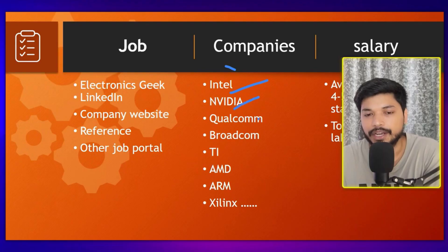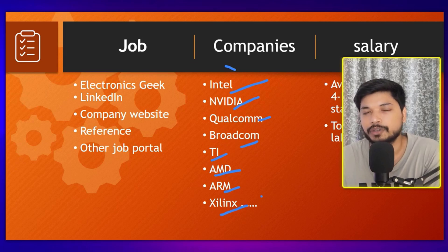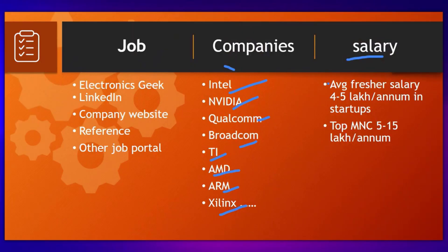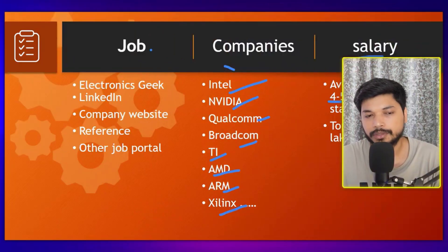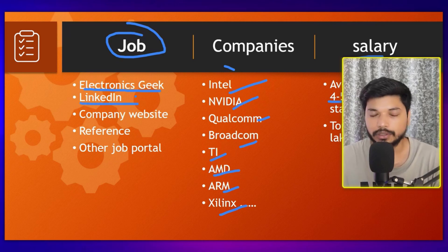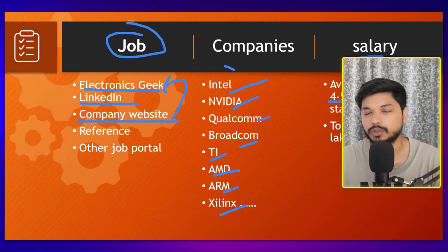Companies you can work at include Intel, NVIDIA, Qualcomm, Broadcom, Texas Instruments (TI), AMD, ARM, Xilinx, and many other MNCs. An average fresher salary in VLSI is 4–5 LPA in a startup or service-based company, and 5–15 LPA in a product-based company. With 1–2 years of experience you can reach 20–25 LPA. Job updates are regularly posted on our YouTube, Telegram, WhatsApp, and LinkedIn channels.